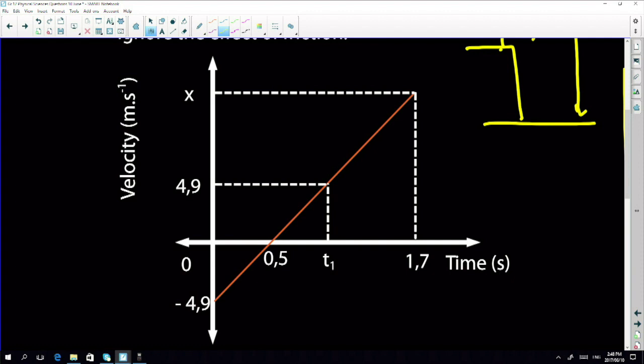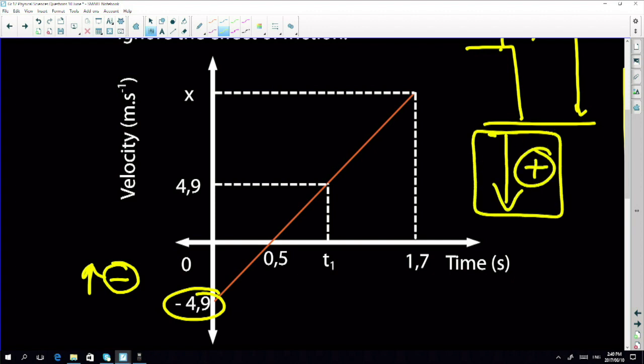Before we do anything else, you have to recognize that this graph is telling me which direction to use as positive. You do not have a choice here. My graph starts at minus 4.9. The question said that I threw it up first. That means they're telling you that the upward direction is negative, which means down is positive.